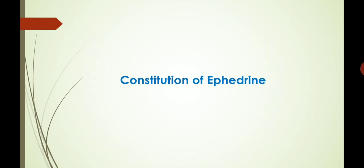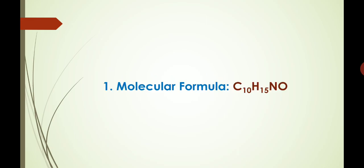Now we start with the constitution of ephedrine. First, as we know, is the molecular formula. With the help of elemental analysis and molecular weight determination, it has been found that the molecular formula of ephedrine is C₁₀H₁₅NO.